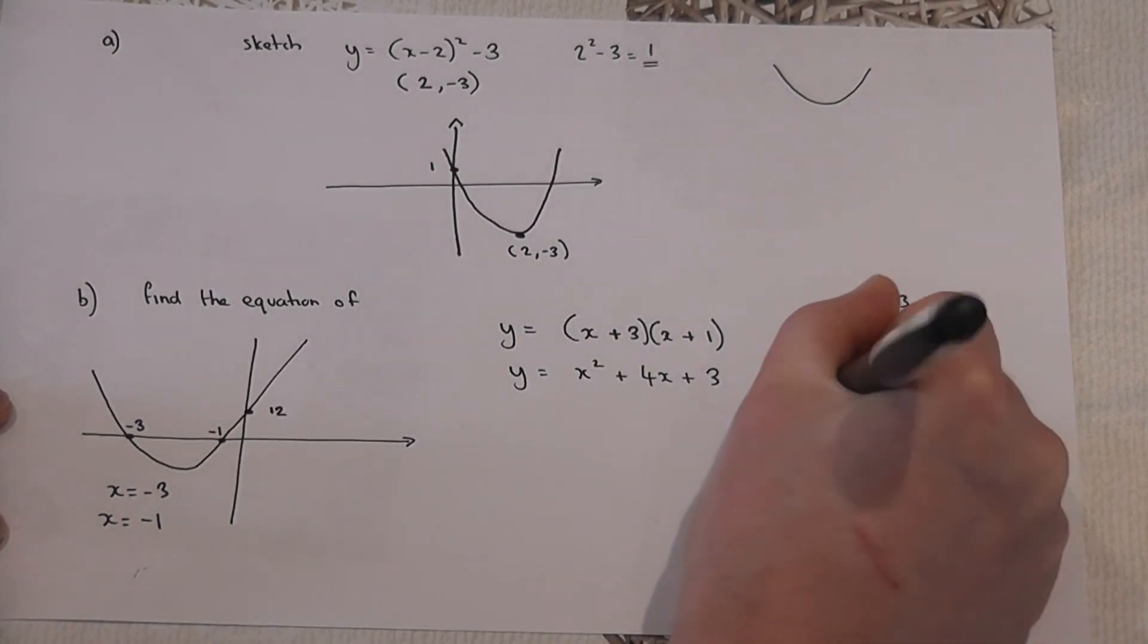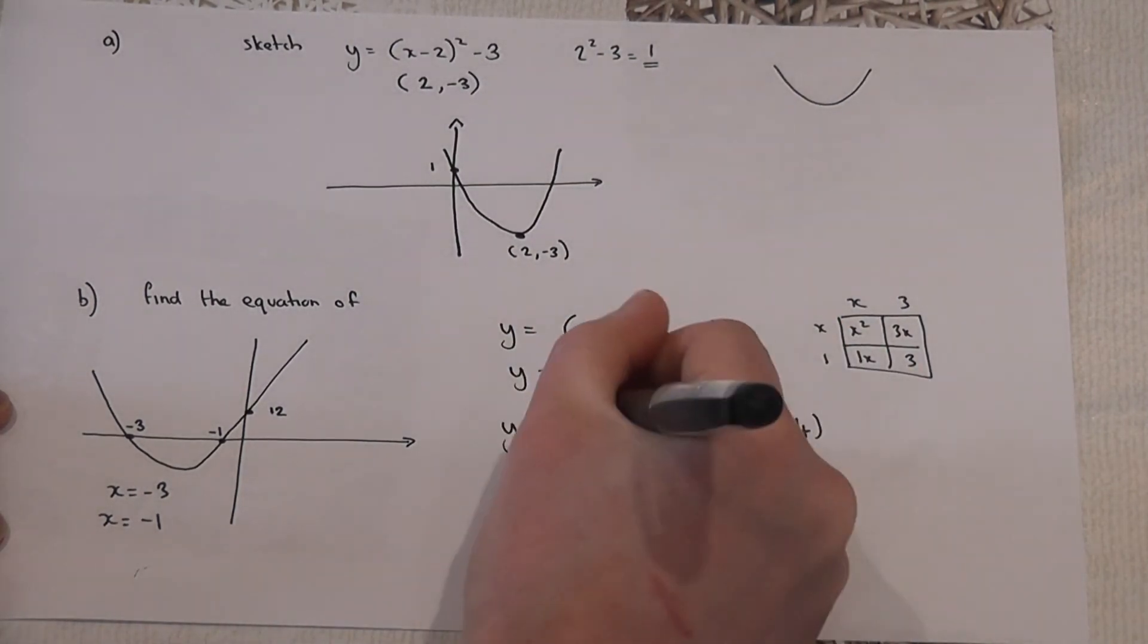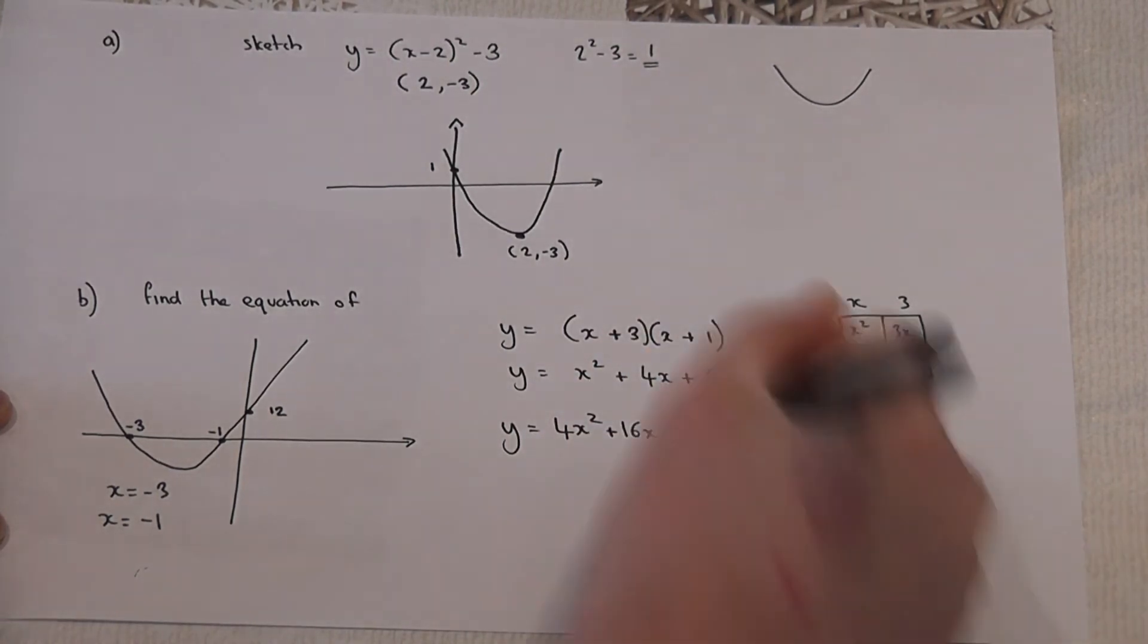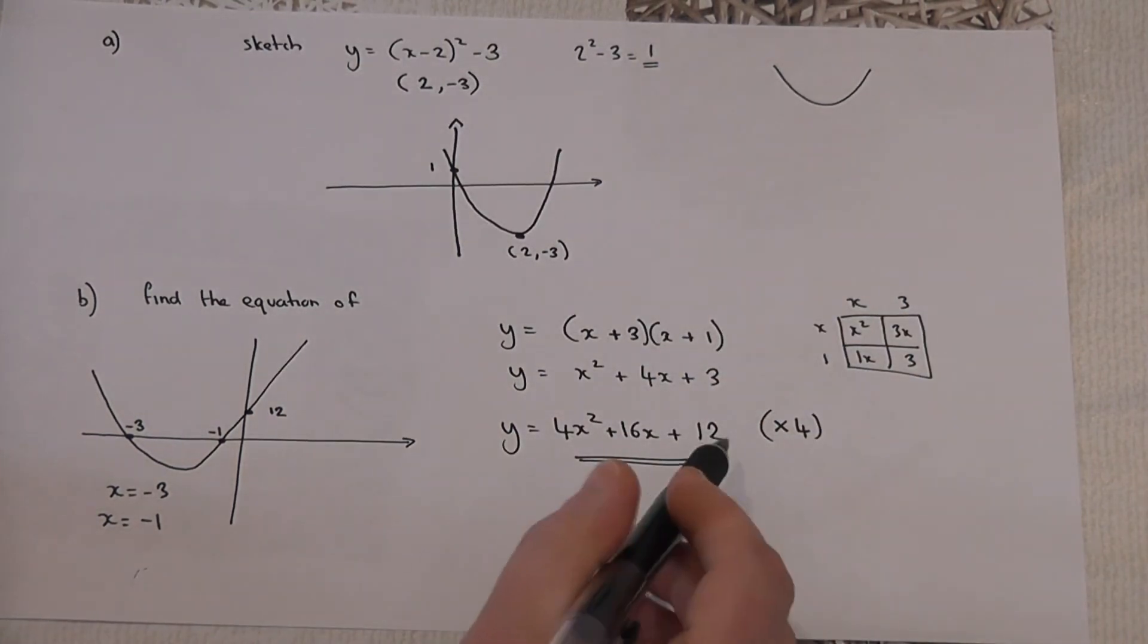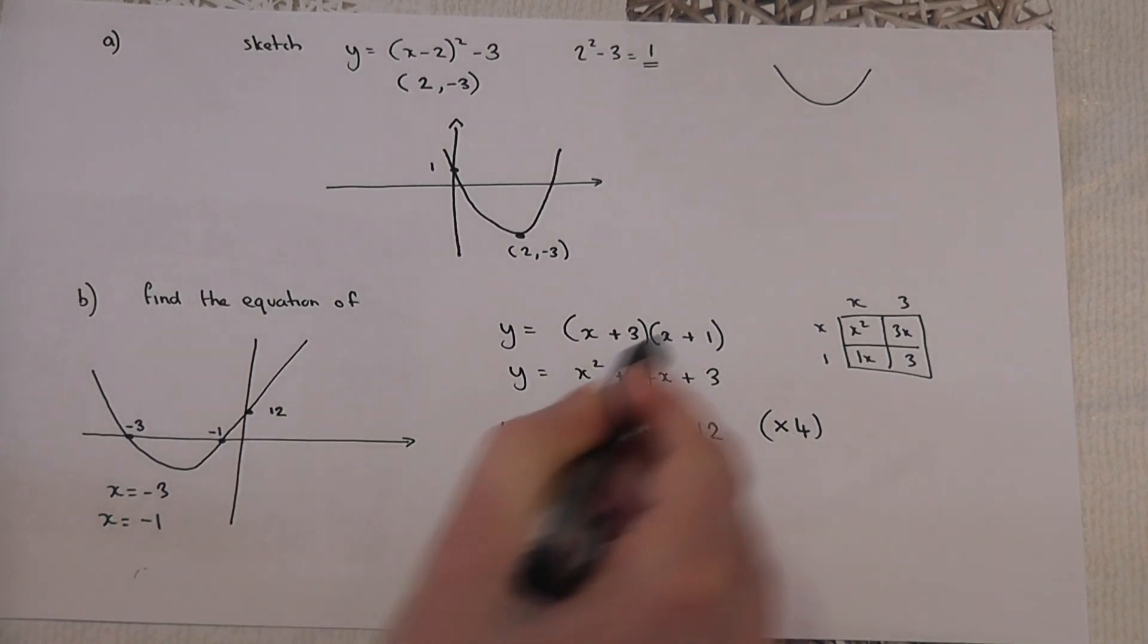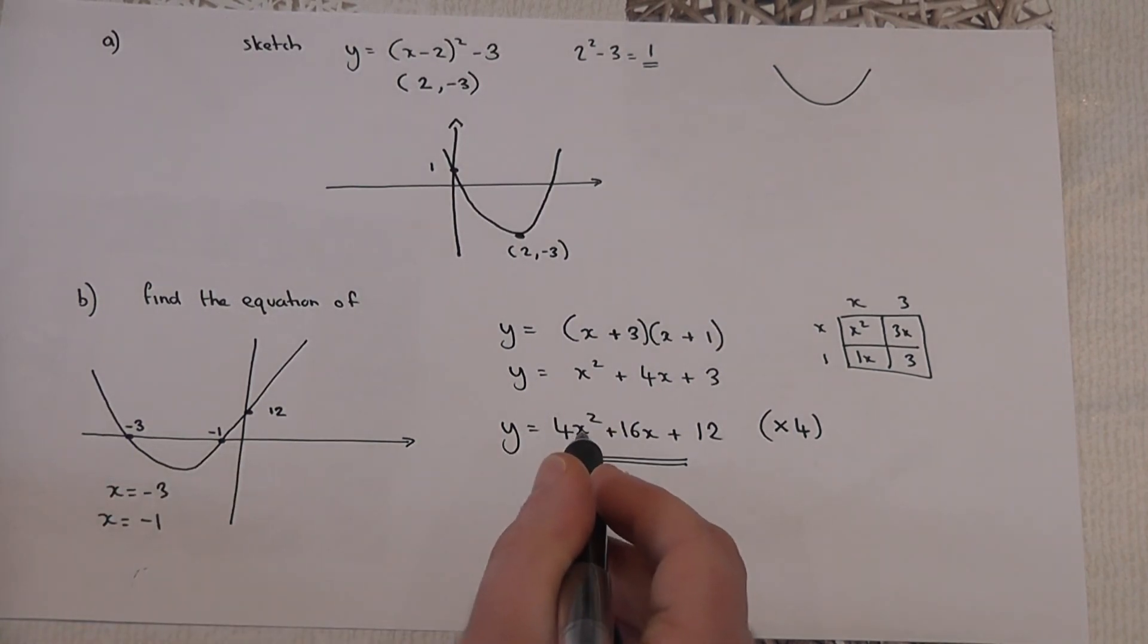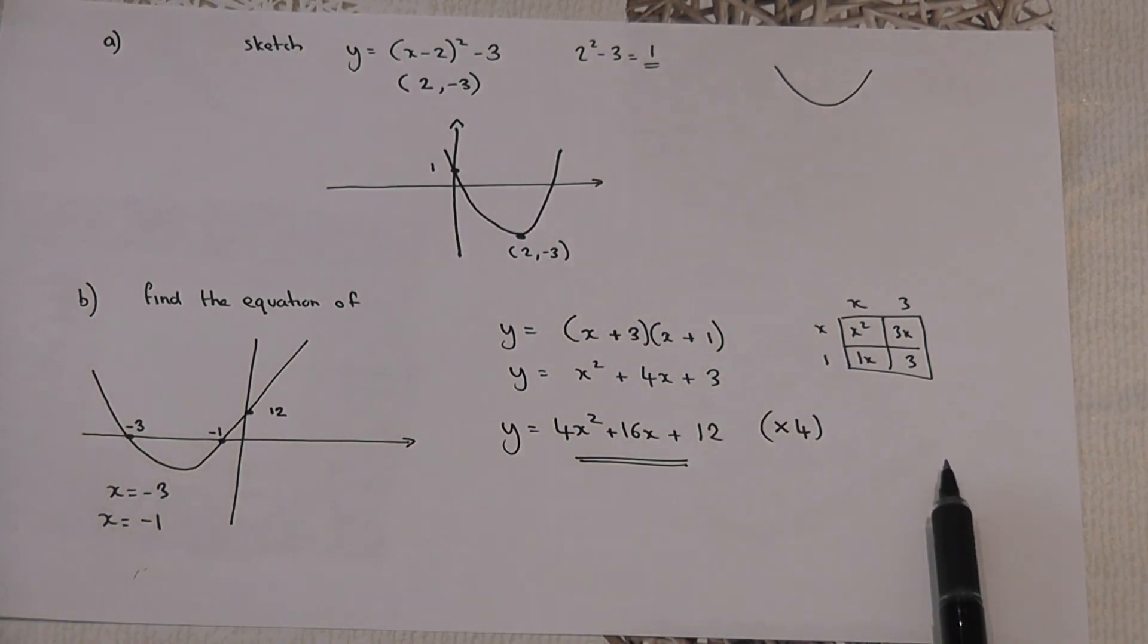So if I times the equation by 4, I get y = 4x² + 16x + 12. And this equation has got the correct y-intercept. It's also got the correct factors to give the correct roots. So the equation is y = 4x² + 16x + 12.